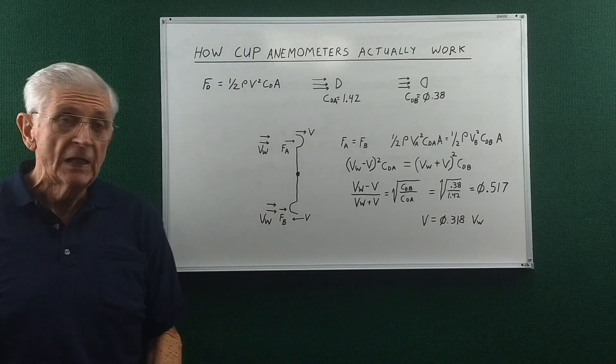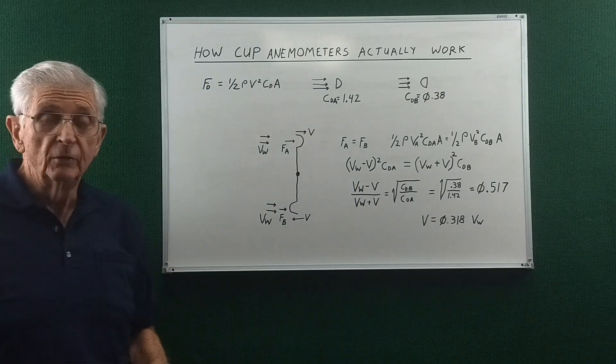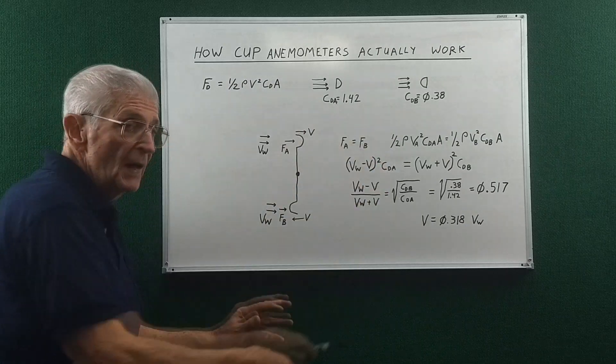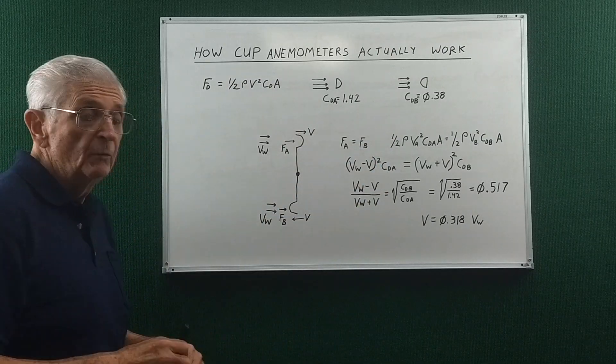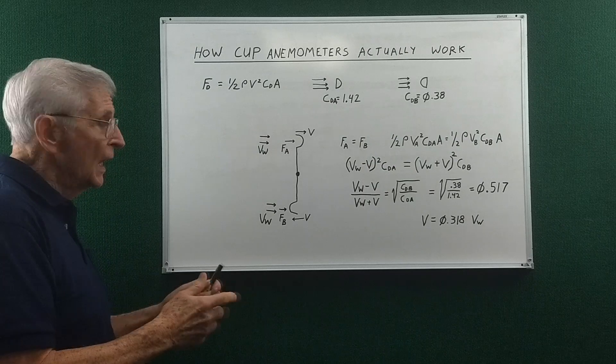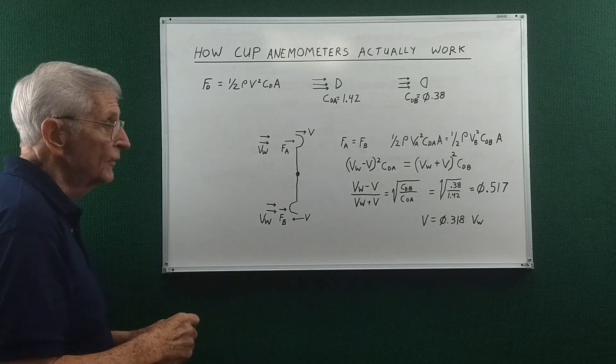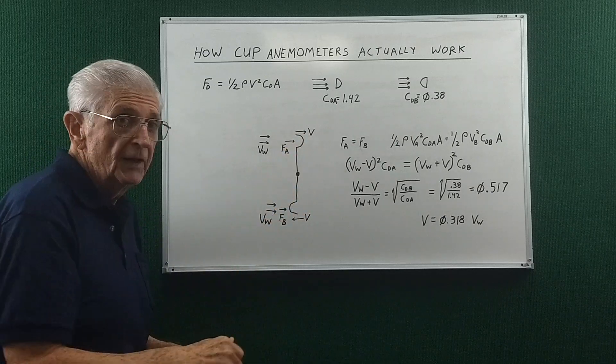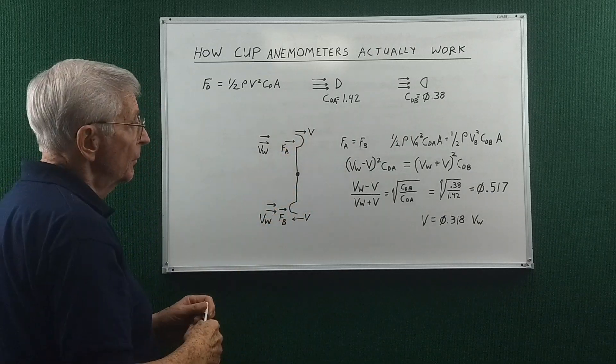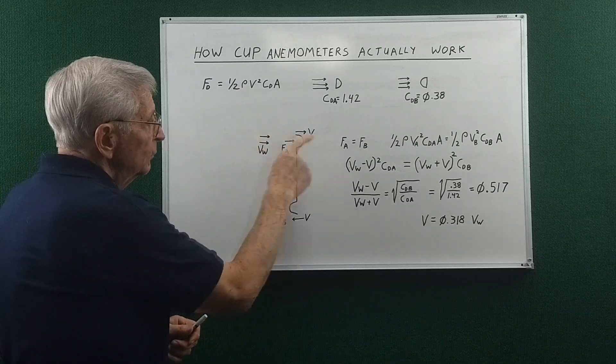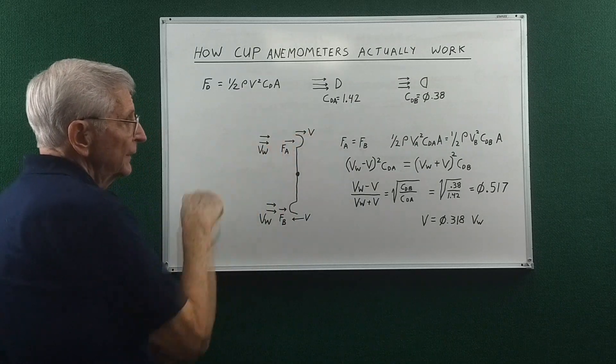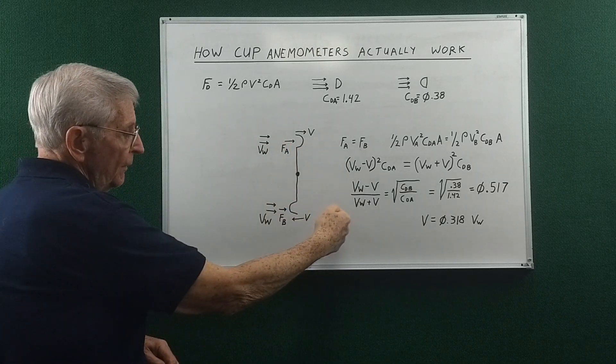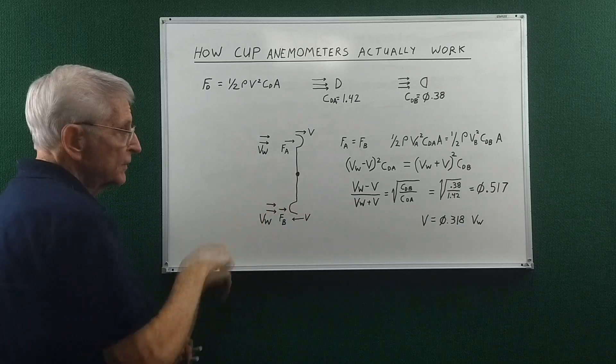Okay, next let's look at how anemometers actually work. We can forget about all the math for a moment and maybe we can see how it works without resorting to the math. Okay, this would represent just two of the four cups on the anemometer, with the wind blowing on that cup in that direction, and of course as this turns the wind is blowing on this cup as well.